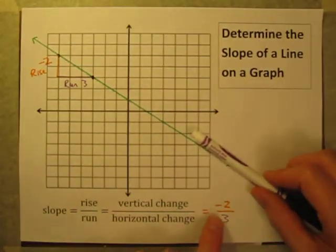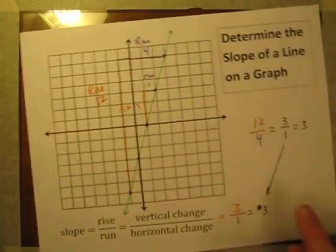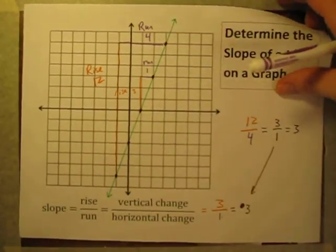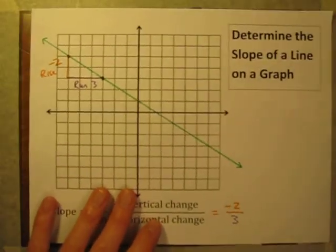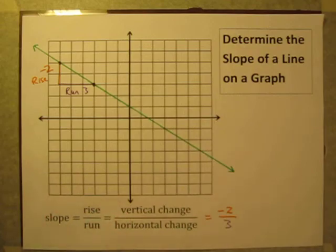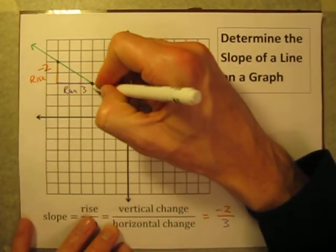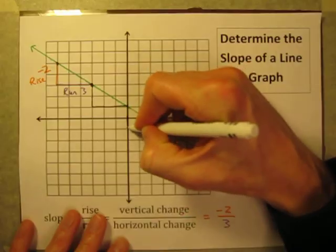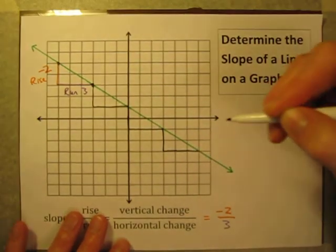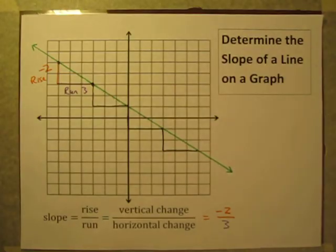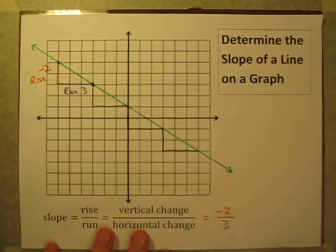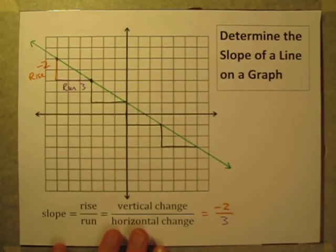This slope is negative because the line goes down and to the right. Down and to the right is a negative slope. In the previous example, up and to the right was a positive slope. You can keep going and see that every time it's down two, right three — that consistent negative slope. Because it's down and to the right, make sure you include that negative sign.